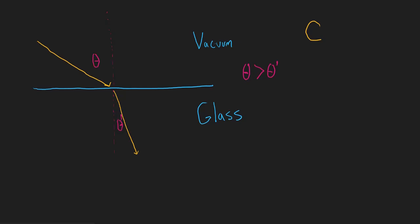The reverse would be true when a light ray moves out. If it were coming out, it would bend the other way. Here, this is theta prime, and the light moves relative to the normal. The angle in the slower medium is going to be smaller than the angle in the faster medium. The angle is always measured relative to exactly perpendicular to the surface — relative to the normal.